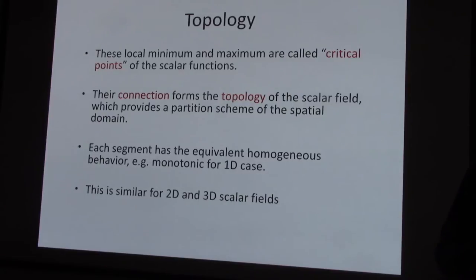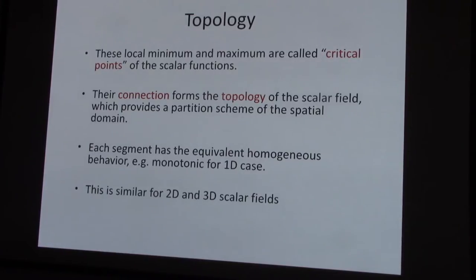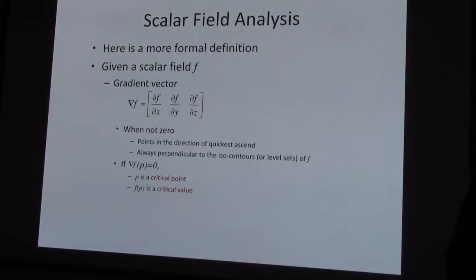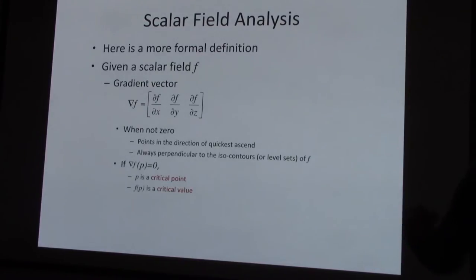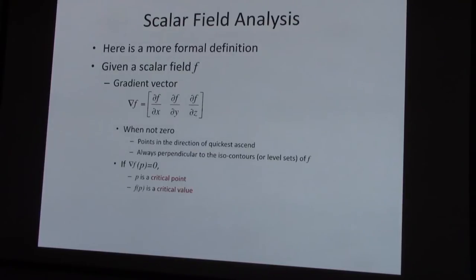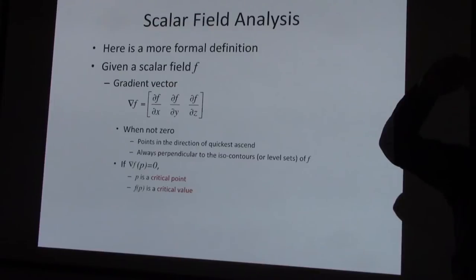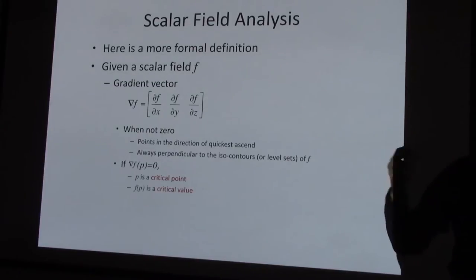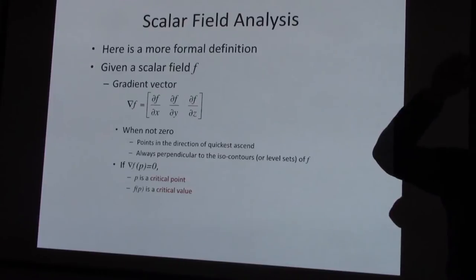Minima and maxima are generally called critical points of scalar functions. We're dealing with scalar field topology — no vector fields. The connection of all these critical points generally is the topology of the scalar field. This concept extends to any n-dimensional scalar field. For a general n-dimensional scalar field, you're no longer looking at the first derivative of one dimension; you're looking at the first derivative of n dimensions — that would be the gradient vector, del f. When it's not zero, it's sort of like gradient descent from a critical point.